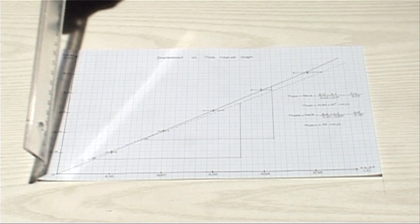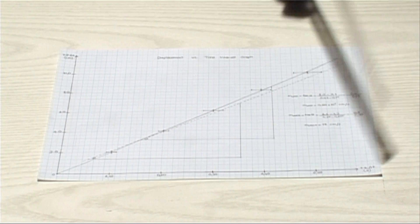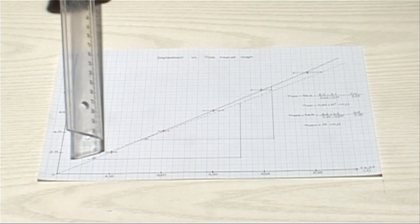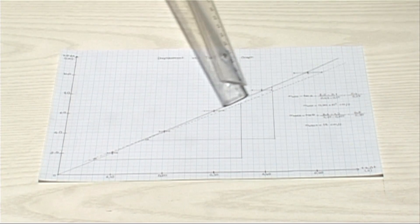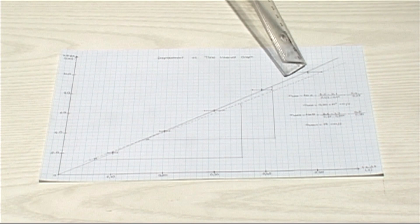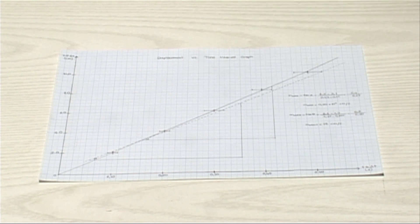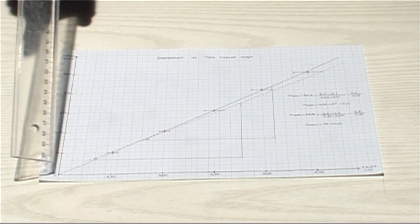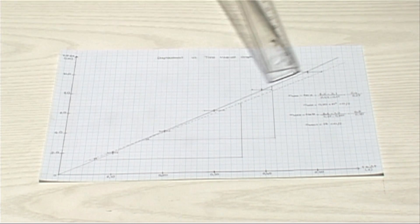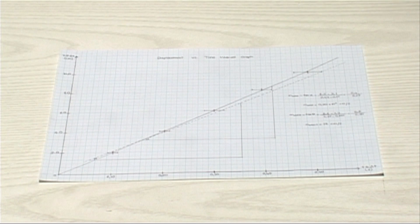First, we determine the axes of the graph. After that, we plot the data with the corresponding error bars. After plotting the data, we draw the line that best fits the data, making use of the information given in the general part of the menu.